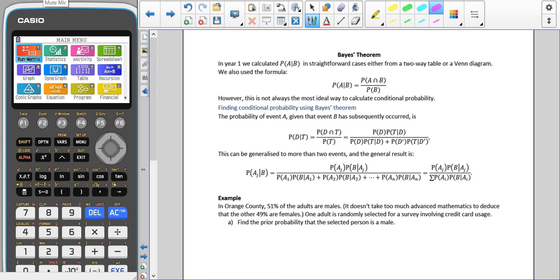So now we're going to move on to having a look at Bayes' theorem. Bayes' theorem is another way that we can find conditional probabilities.